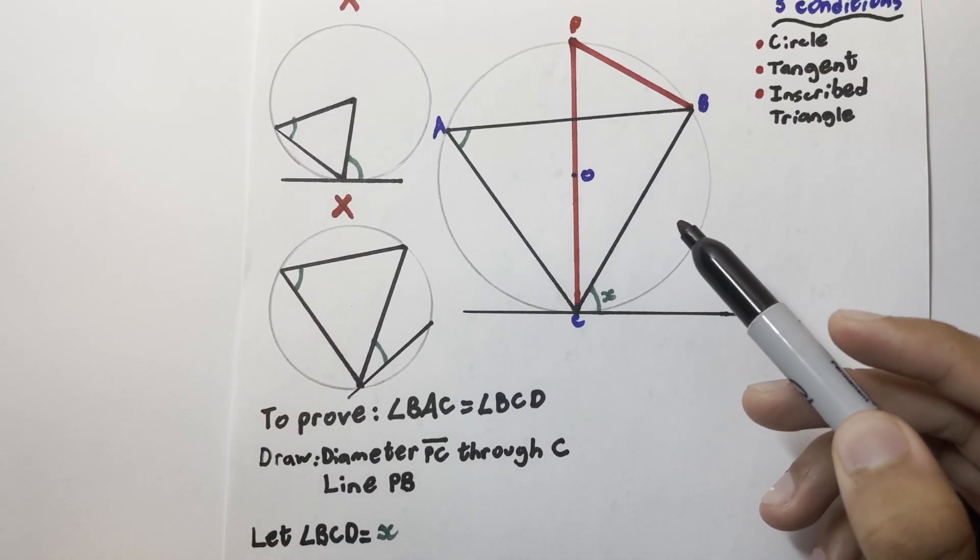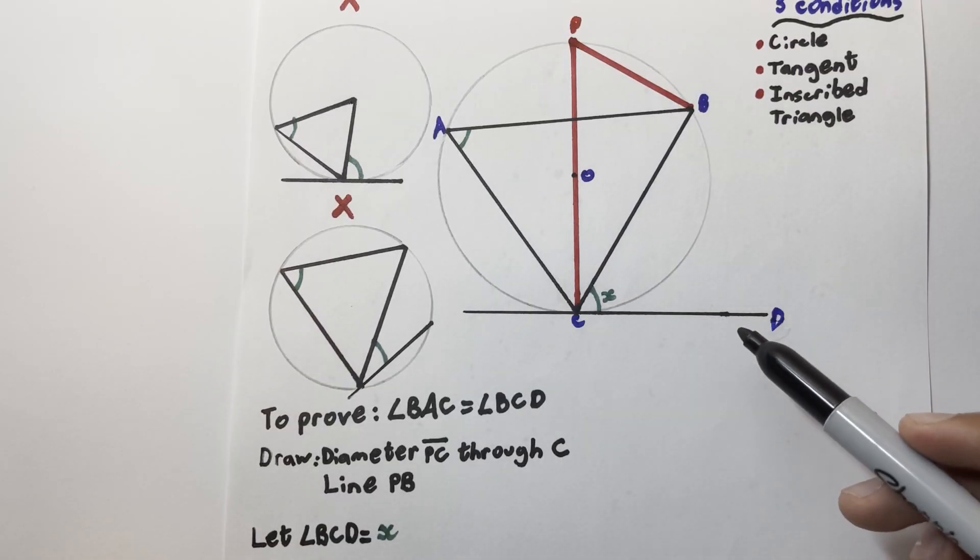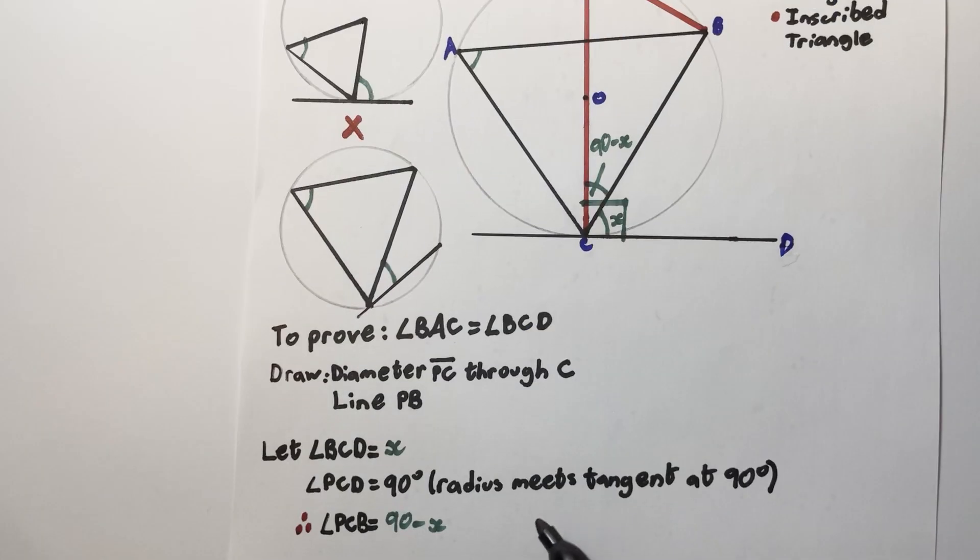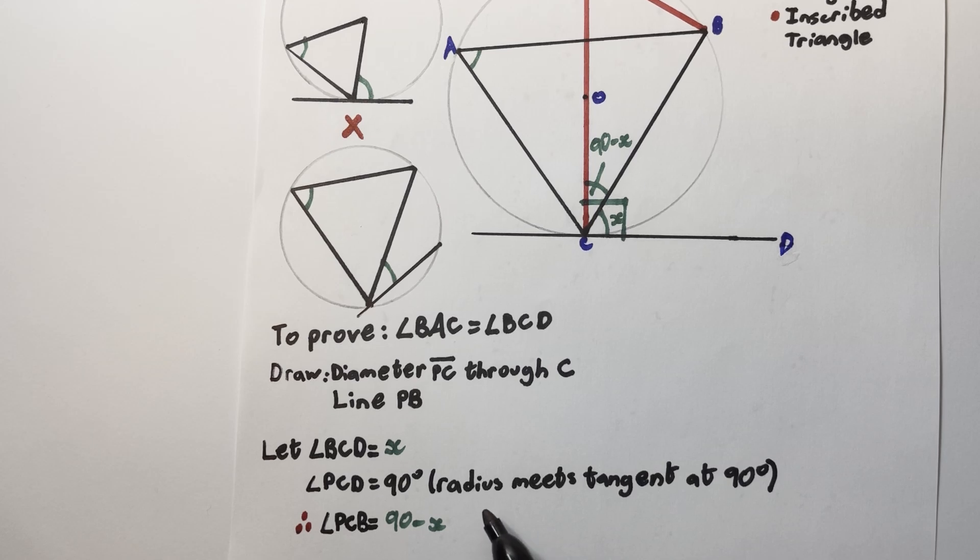We're going to introduce our first variable x, which is angle BCD. This will make solving the algebra later on in this problem much easier. Now we think back to one of the first circle theorem rules that we covered, that the radius meets tangents at 90 degrees.